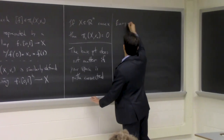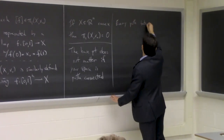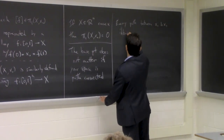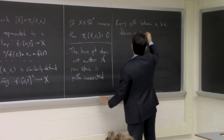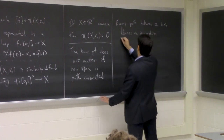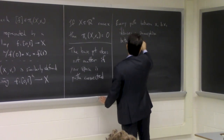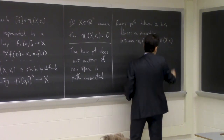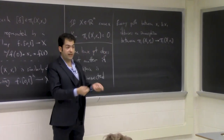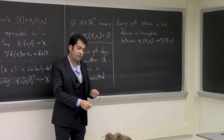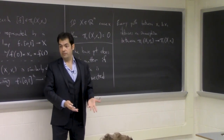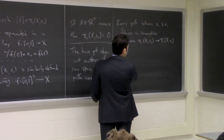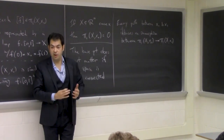More precisely, every path between two points induces an isomorphism between the fundamental groups at those points. The point is, if you can connect two points with a path, then the fundamental groups based at those points are isomorphic. We mentioned that the next thing we're going to do is give an example of a non-trivial fundamental group — we're going to compute the fundamental group of the circle and show that it's the integers.